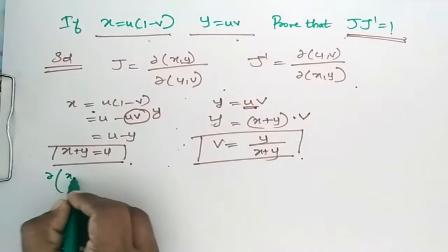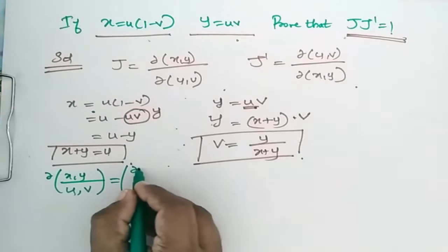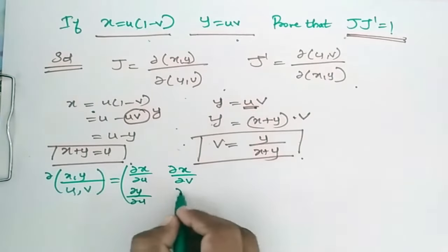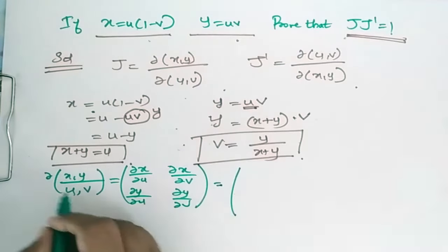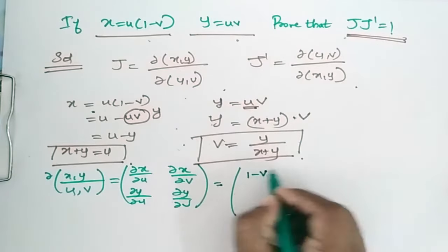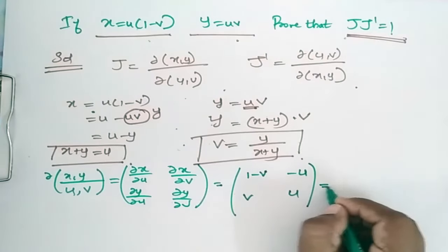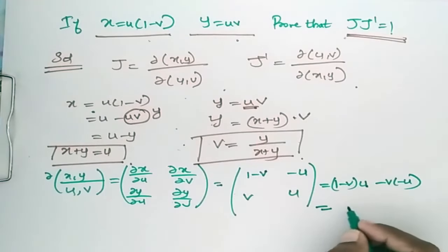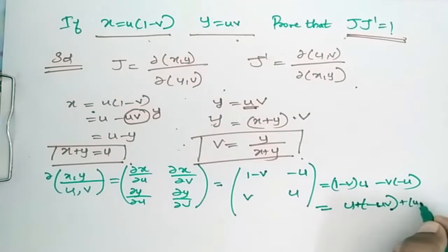Now, ∂(x,y)/∂(u,v) is the determinant with entries: ∂x/∂u, ∂x/∂v, ∂y/∂u, ∂y/∂v. This evaluates to (1 minus v)(u) minus (minus u)(v), which equals u minus uv plus uv, giving us u.